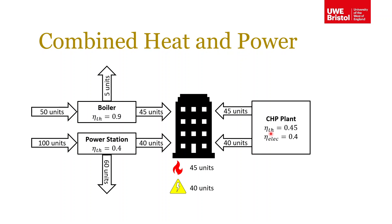The lower thermal efficiency is reasonable because the heat is lower grade — you're taking heat from the exhaust. With 45 units of thermal energy at 45 percent efficiency and 40 units of electrical energy at 40 percent efficiency, we need to put in 100 units of energy into the CHP plant. We're getting 85 units out in total, so we're rejecting 15 units.